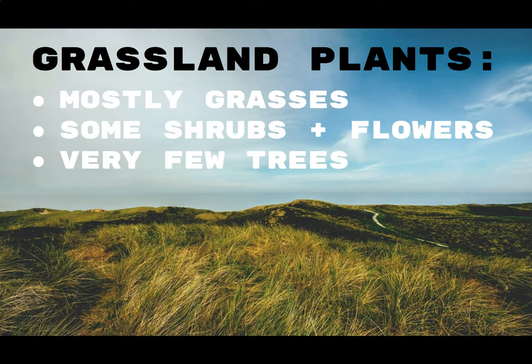Grasslands can also be called plains or prairies. If you drive east of here out towards eastern Colorado, you'll hit the edge of the Great Plains. Where we live is right on the edge of a huge grassland covering the middle of our country. As you drive east towards Kansas and Nebraska, you'll drive through hours of fields of grass with not many trees or other plants. A grassland is really defined by grass.